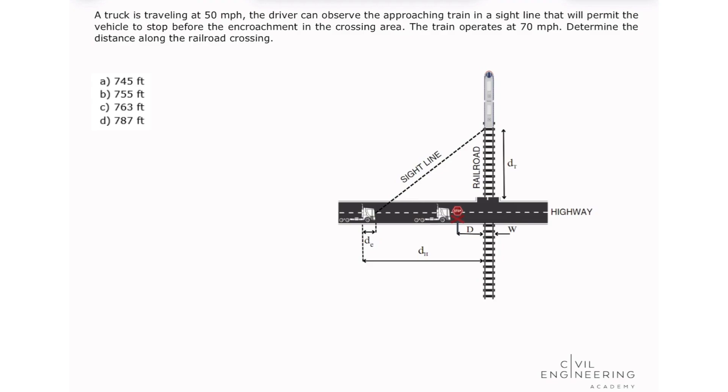The problem states: A truck is traveling at 50 miles per hour. The driver can observe the approaching train in a sight line that will permit the vehicle to stop before the encroachment in the crossing area. The train operates at 70 miles per hour. Determine the distance along the railroad crossing, d sub t, which is the distance along the railroad crossing.